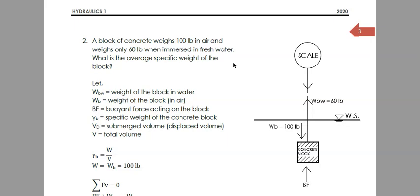Let's proceed to the second illustrative problem. A block of concrete weighs 100 pounds in air and weighs only 60 pounds when immersed in fresh water. What is the average specific weight of the block?